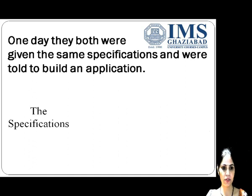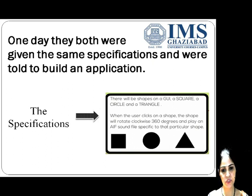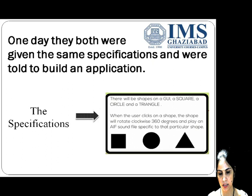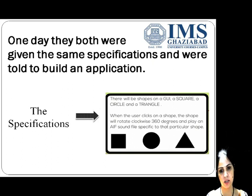The specifications were that they have to create three shapes — a square, a circle, and a triangle. The problem was that when the user clicks on any of the shapes, the shape will rotate 360 degrees and a particular sound would be played when the shape rotates.